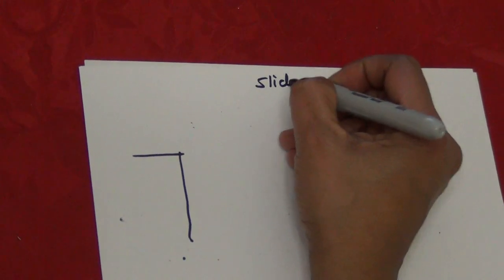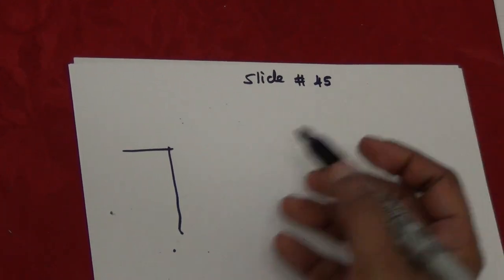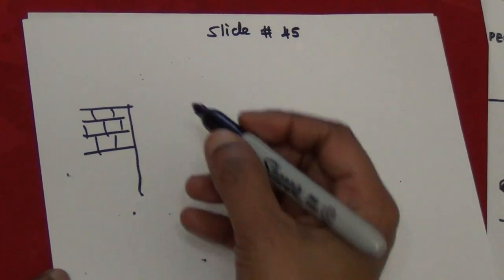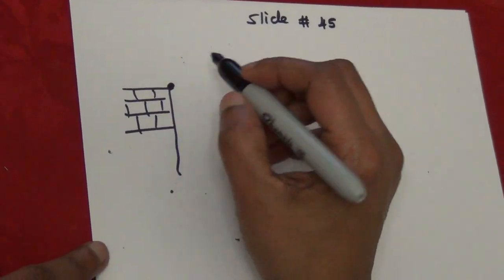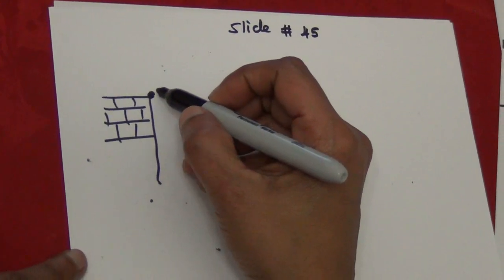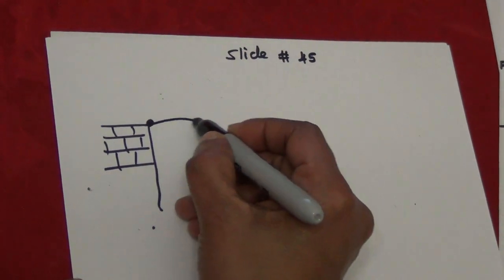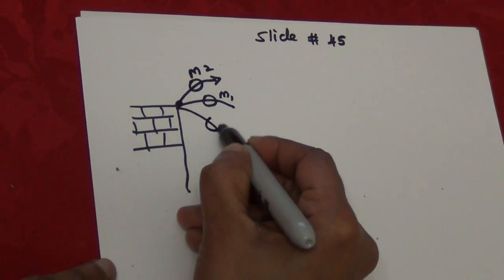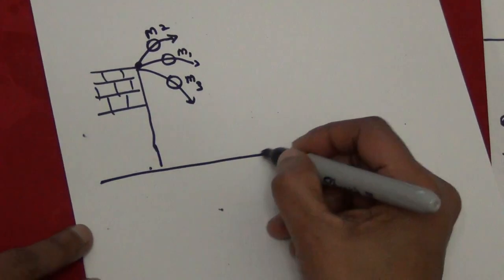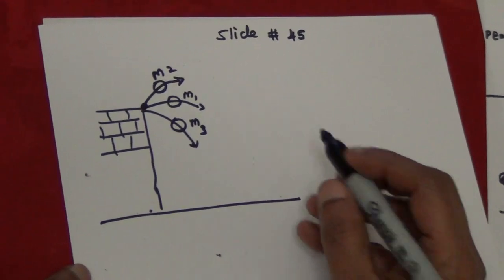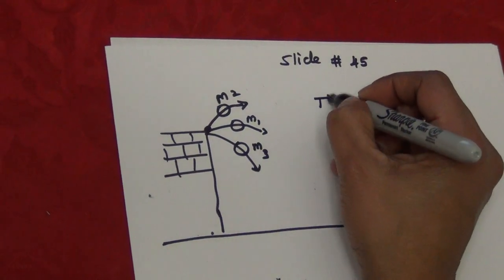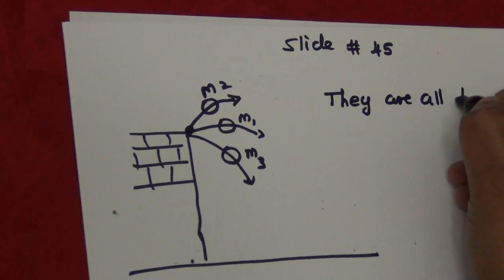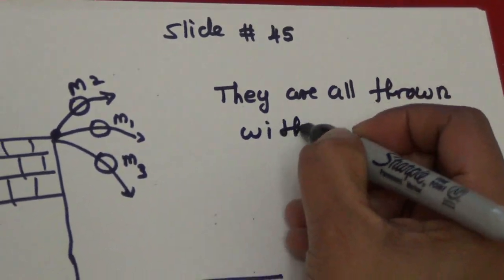Before the next video, one more example from slide number 45. There is a building, and from a certain position a person throws three balls of different masses at different angles — m1, m2, and m3 all hit the ground. The condition is that the masses are different, but they are all thrown with the same initial velocity v_i.